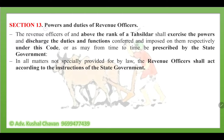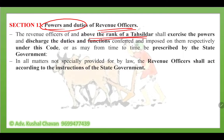Section 11 deals with the subordination of officers. All revenue officers shall be subordinate to the state government. All other revenue officers shall be subordinate to one another in such order as the state government may direct — from commissioner to collector, collector to SDO, SDO downward — so they are all subordinate to one another in that hierarchy. The state government defines key appointments through notification about the rank of officers.